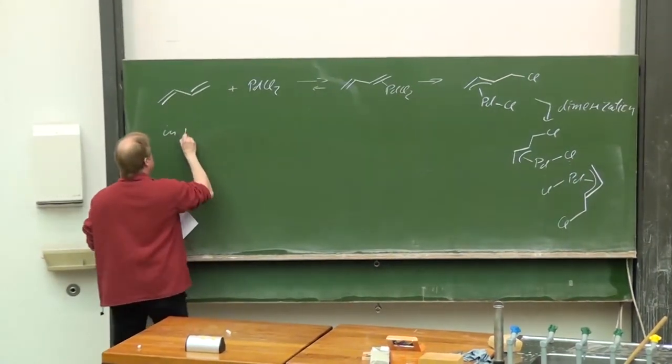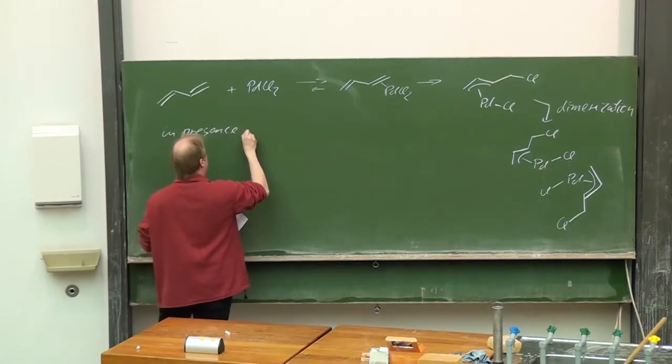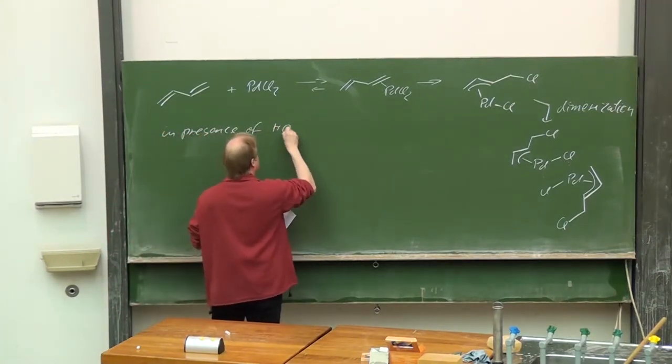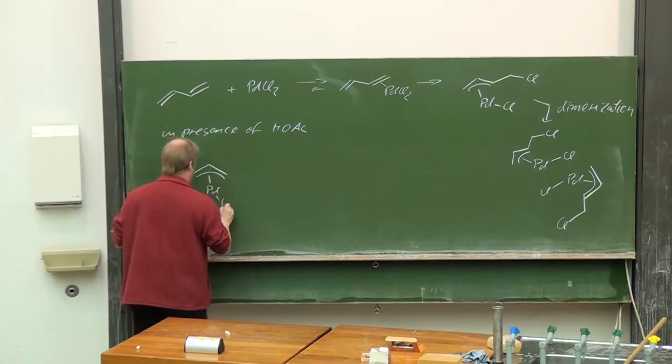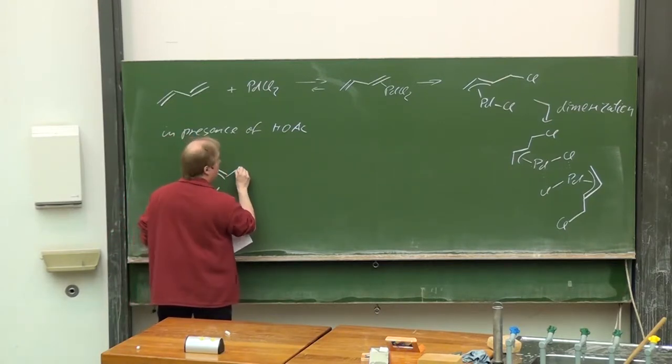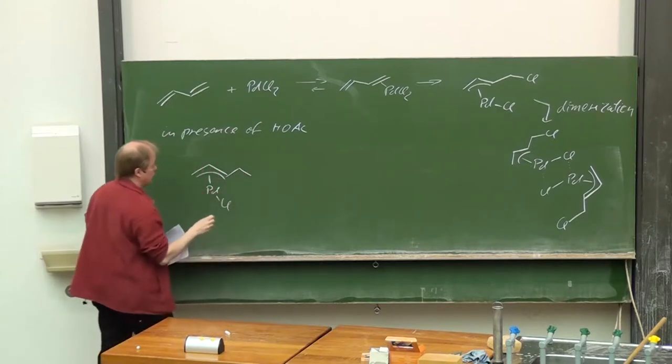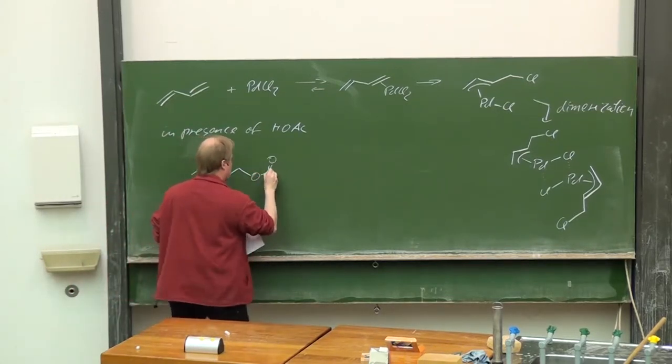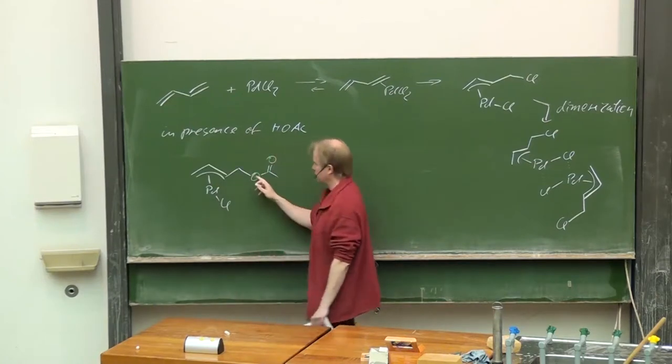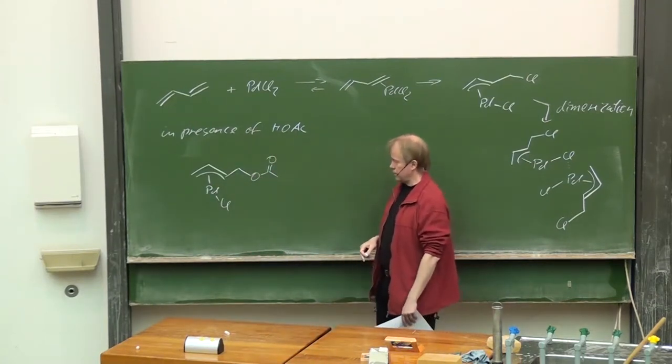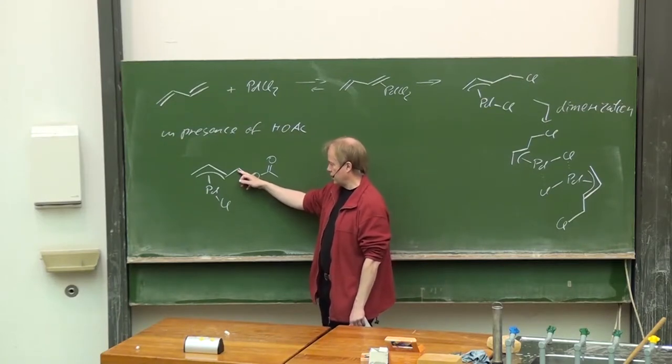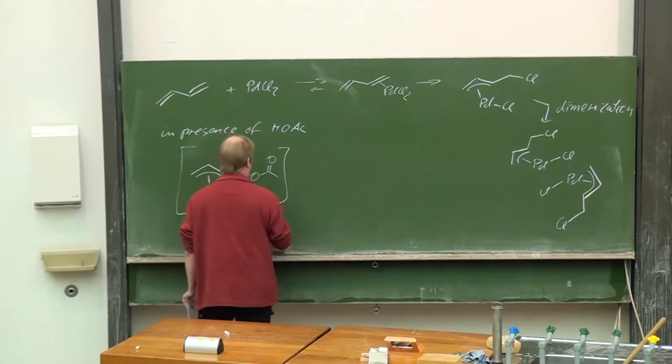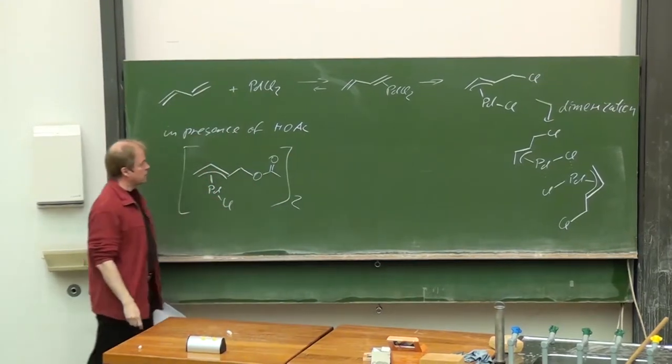Once a chloride is transferred to the terminus then a palladium allyl complex is formed, maybe first eta-1 but then a palladium pi-allyl complex. This dimerizes forming such a coordination dimer and this turns out to be rather stable and can be isolated.